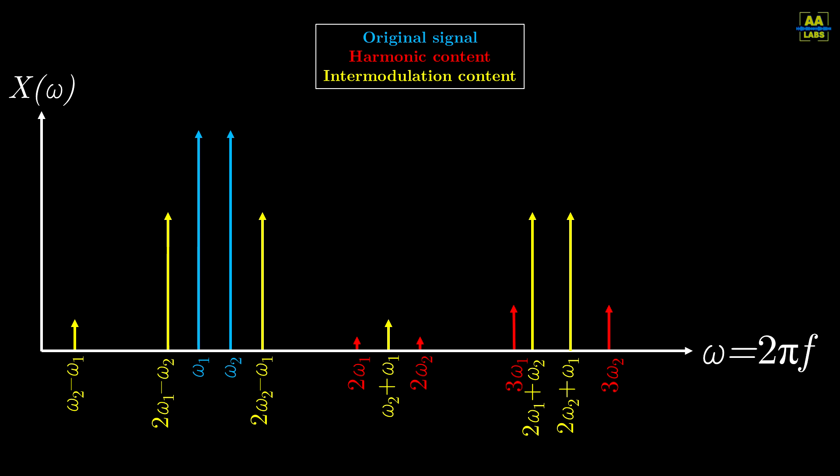Now, these frequency components will be at different amplitudes. The amount of harmonic and intermodulation content depends on both the amplifier's characteristic curve and the amplitudes of the input. Put more simply, the distortion products will increase in magnitude the further you overdrive the amplifier.